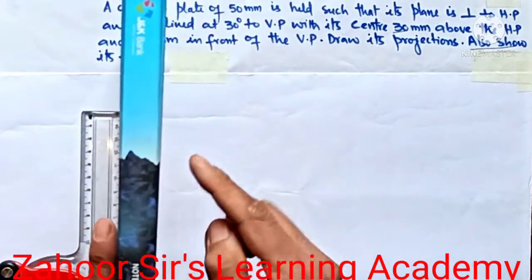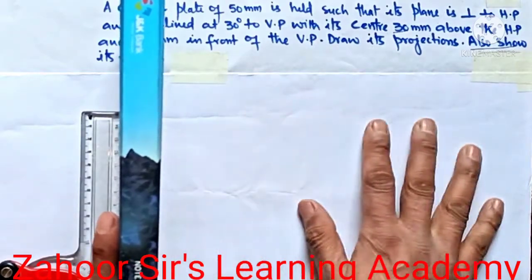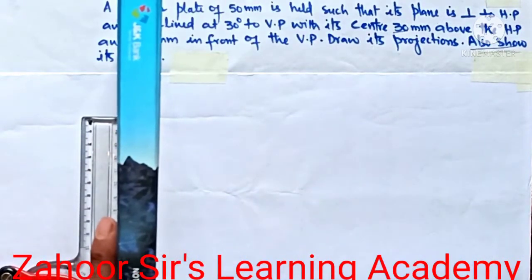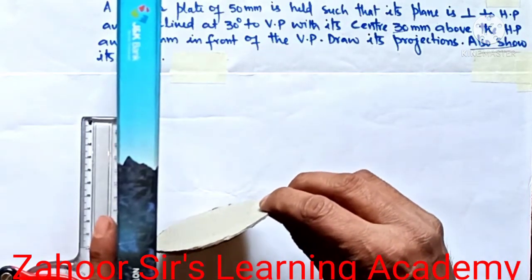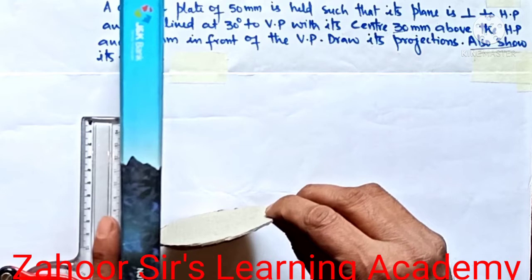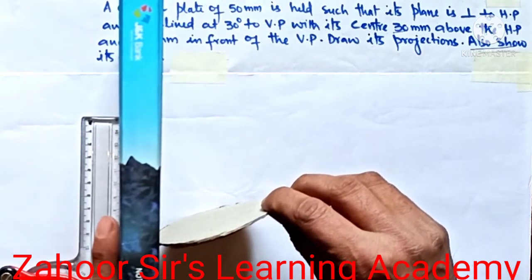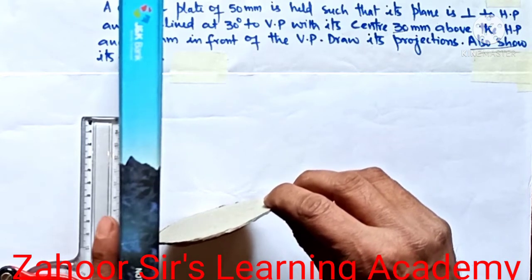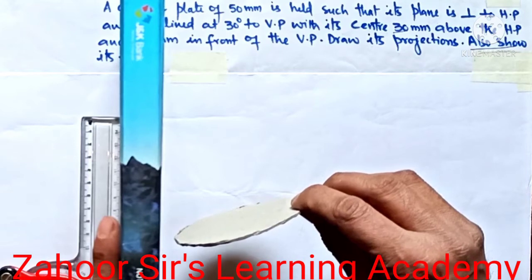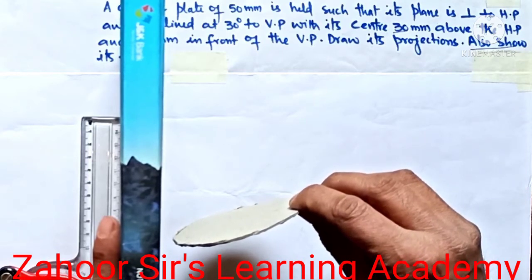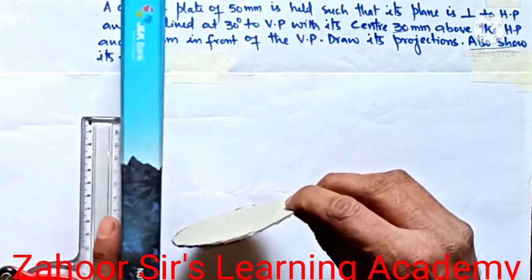If you take this as the VP and this as the horizontal plane, this is my circular plate. If you see it from the top view, it is inclined to the VP at an angle of 30 degrees. The circular plate is 20 mm in front of VP, and the center of the circle is 30 mm above the HP.